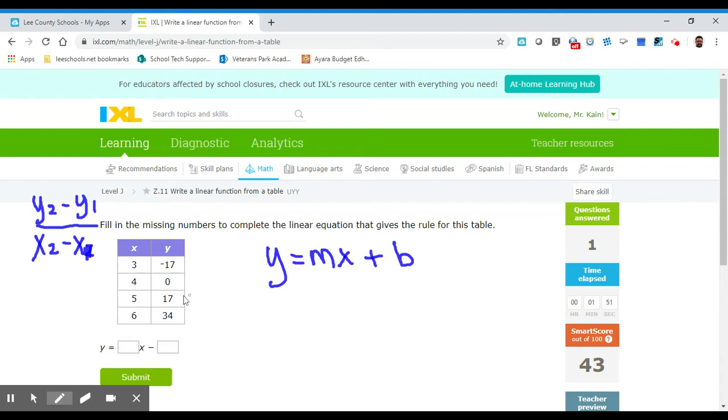So like I showed you before, let's look at our y's and look for the bigger y in the direction that you're going. It doesn't matter where you go, but let's do this one. This one's easy, 17 minus 0 is 17. So I subtracted the y's, and if I started with this one, I need to start with this one. 5 minus 4 is 1. So the slope of this equation, the m in other words, is 17.